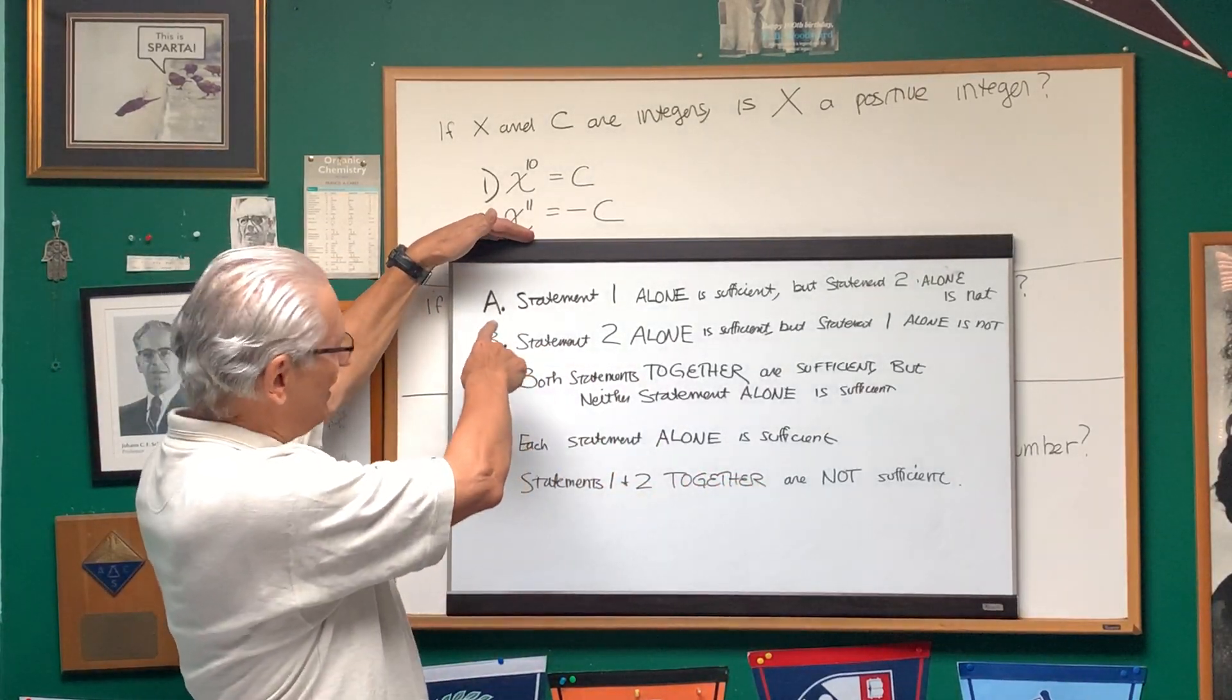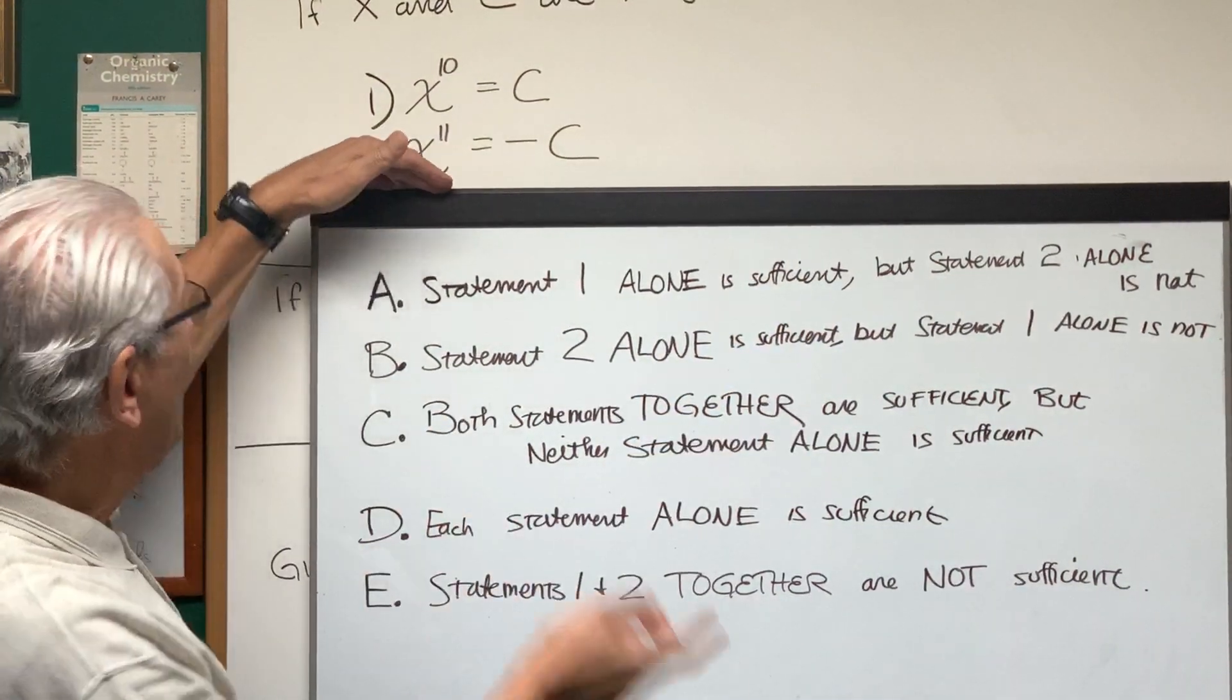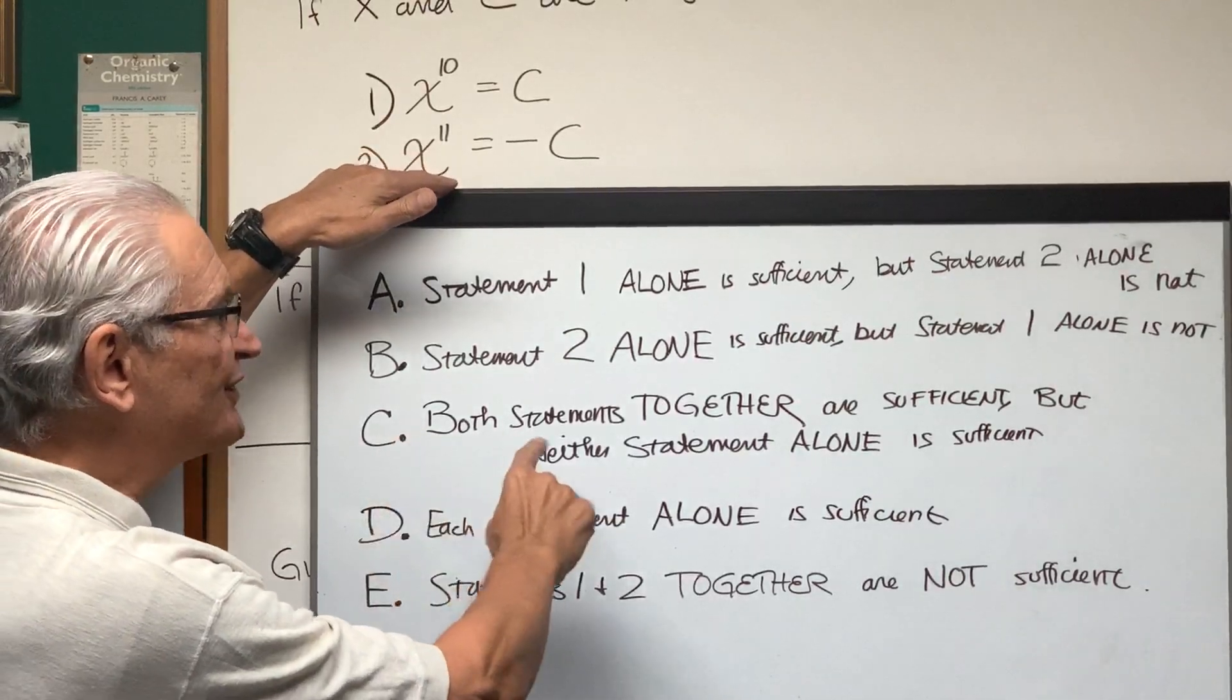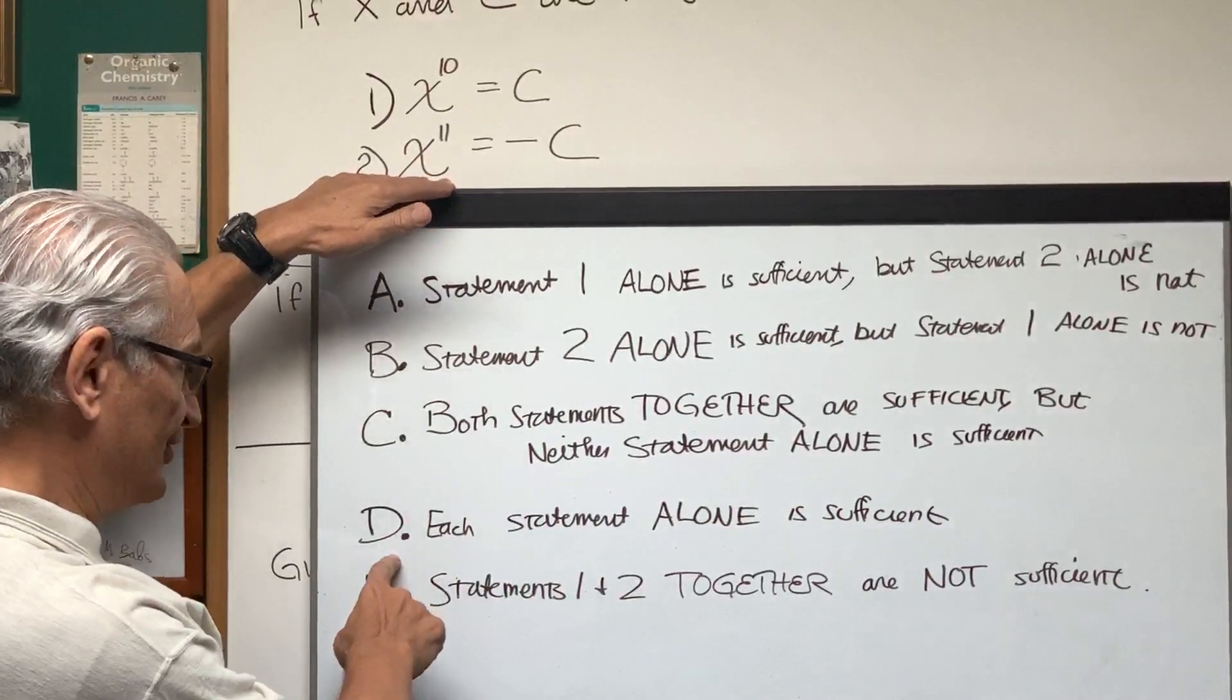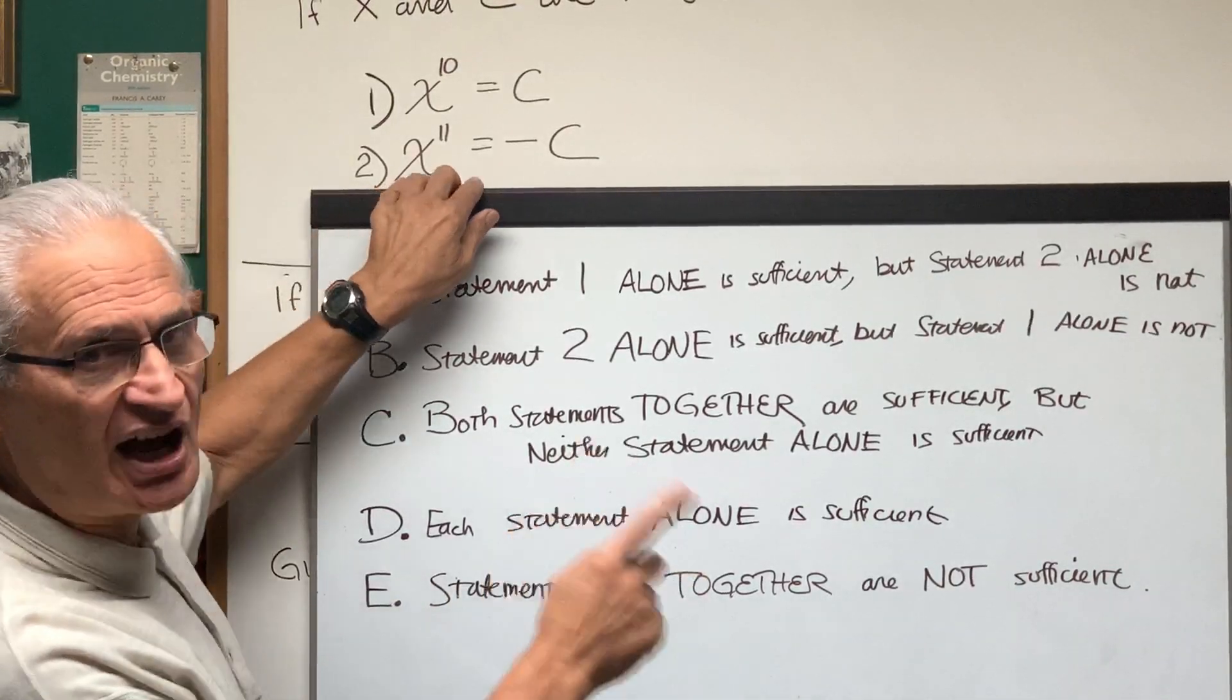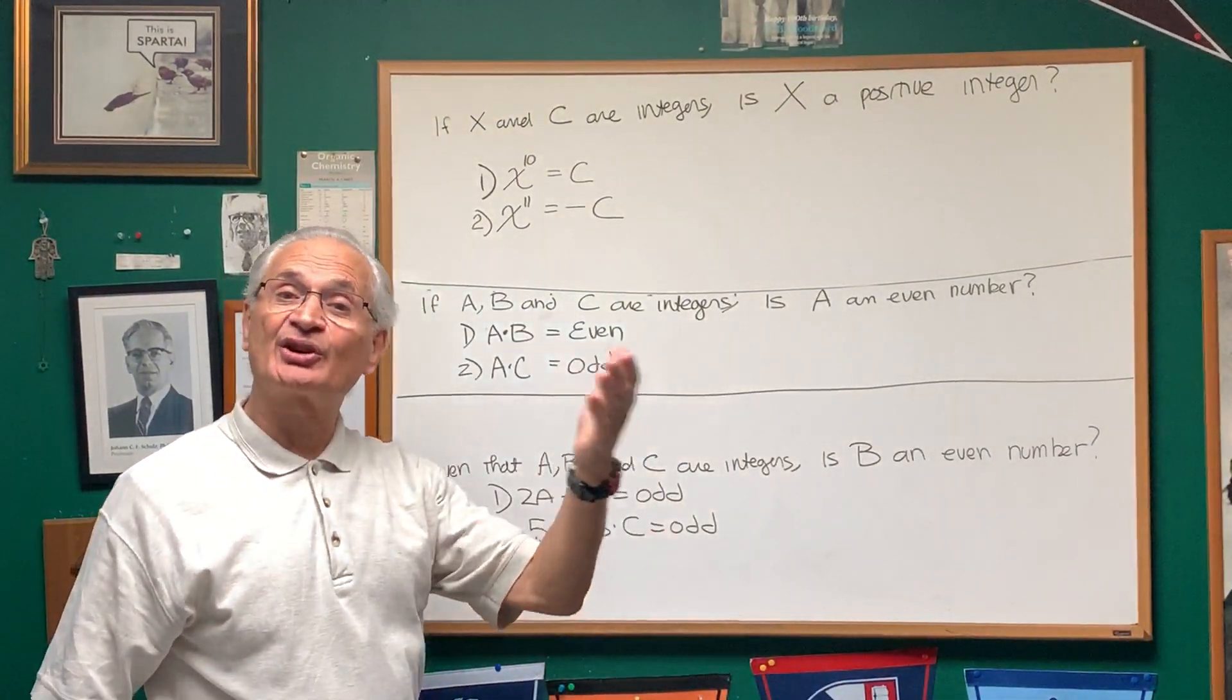Let's read them together. Answer A, statement one alone is sufficient but statement two alone is not. Answer B, statement two alone is sufficient but statement one alone is not. Answer C, both statements together are sufficient but neither statement alone is sufficient. Answer D, each statement alone is sufficient. And finally, answer E, statements one and two together are not sufficient. So now let's look at a couple of problem types of this sort and see if we can sort out the answer.